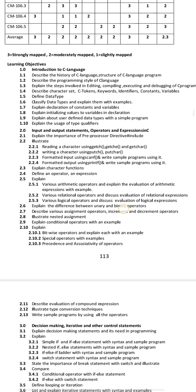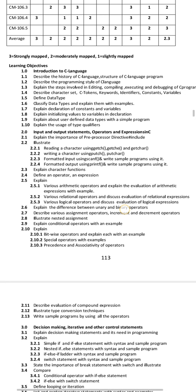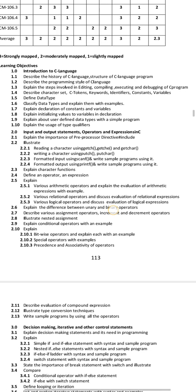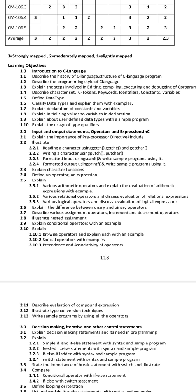The next important essay question is: explain the steps involved in editing, compiling, executing, and debugging of a C program. This is 8 marks. We cover C programming — compile, execute, and debug. Before running, we can use C documentation. You can detect errors in case you have a problem. So the two important essay questions from the first chapter are: structure of C program, and steps involved in editing, compiling, executing, and debugging.